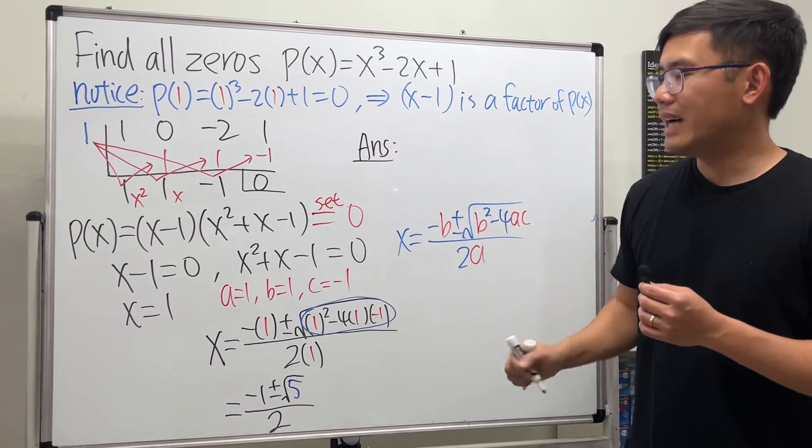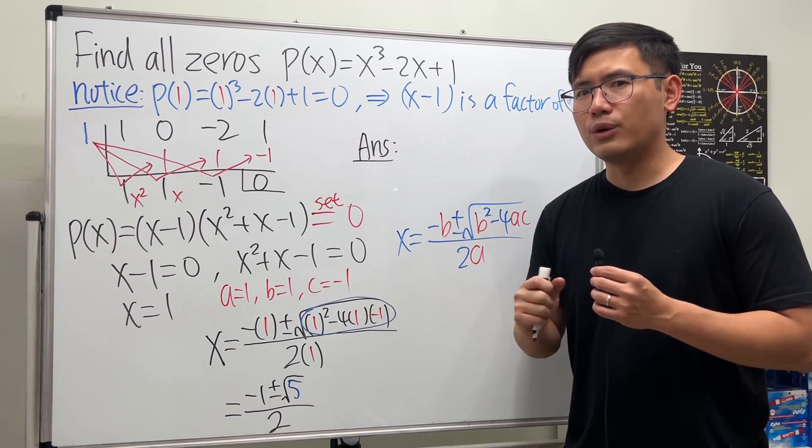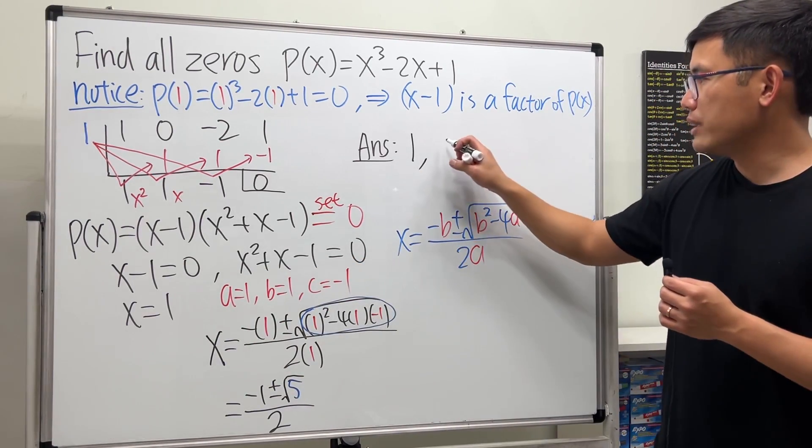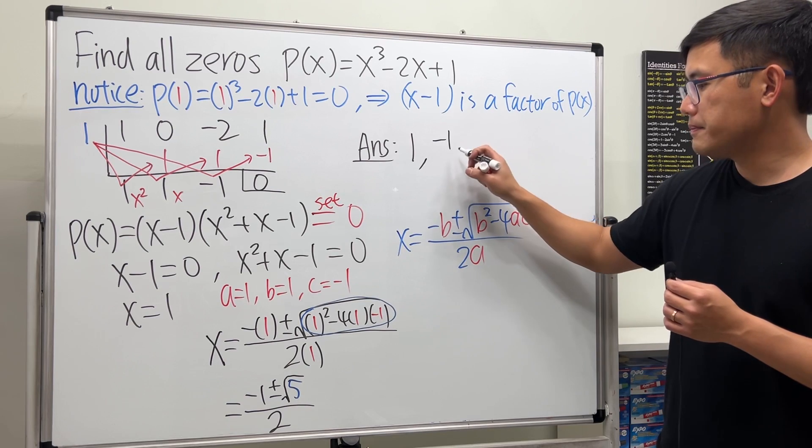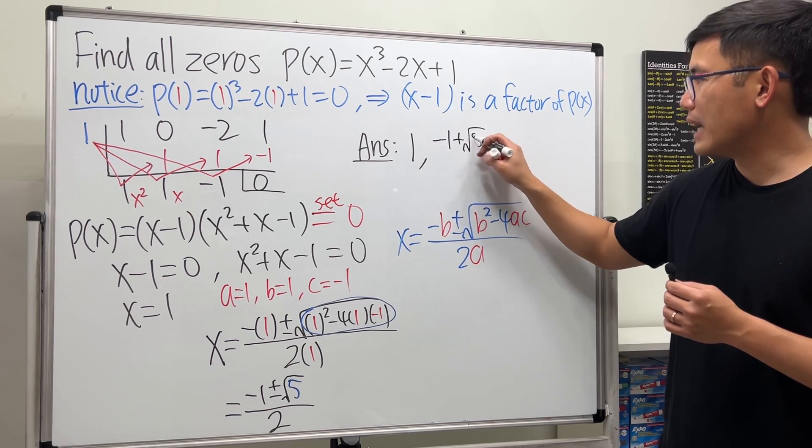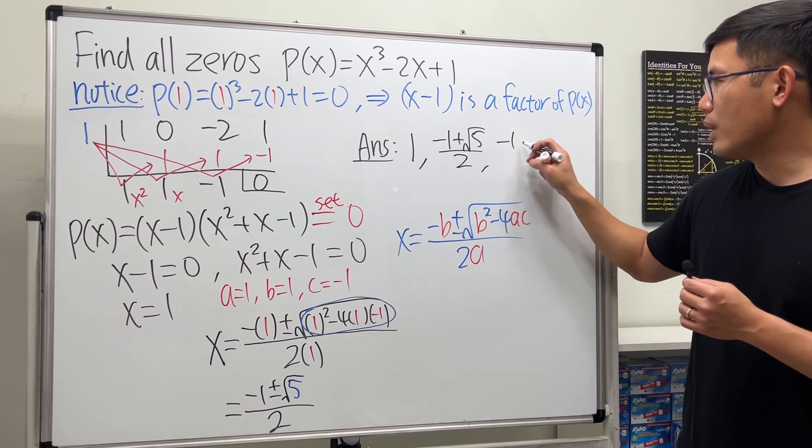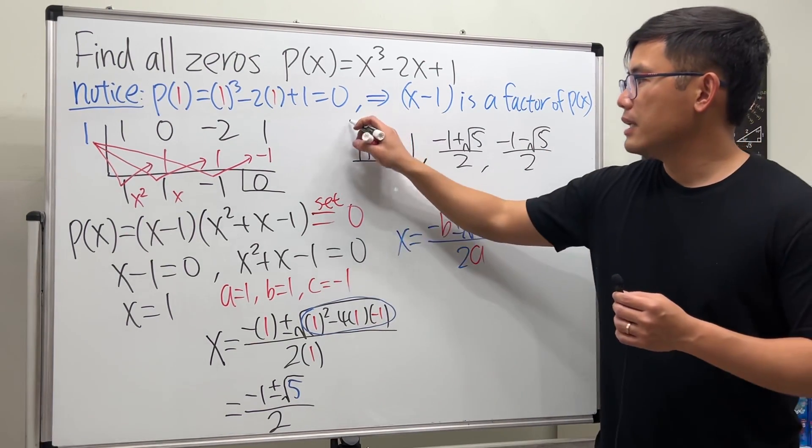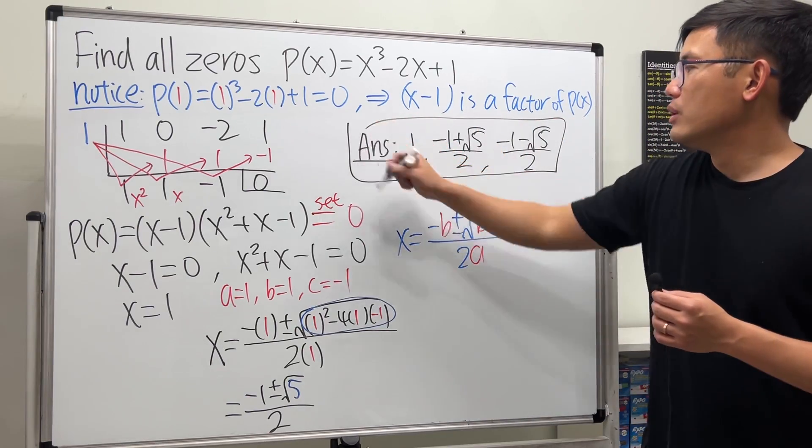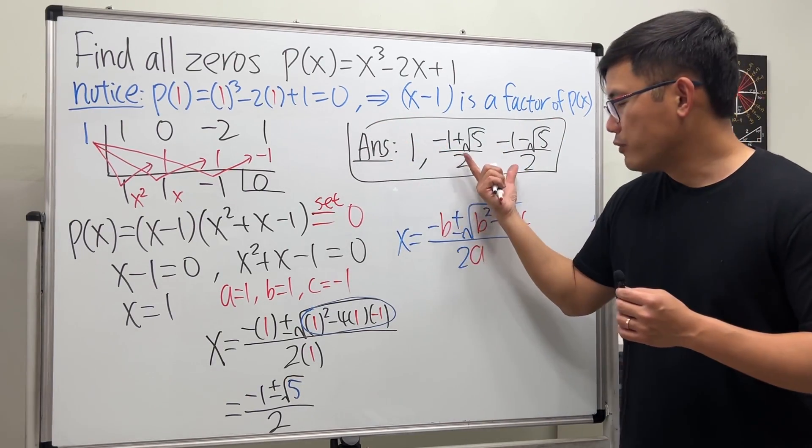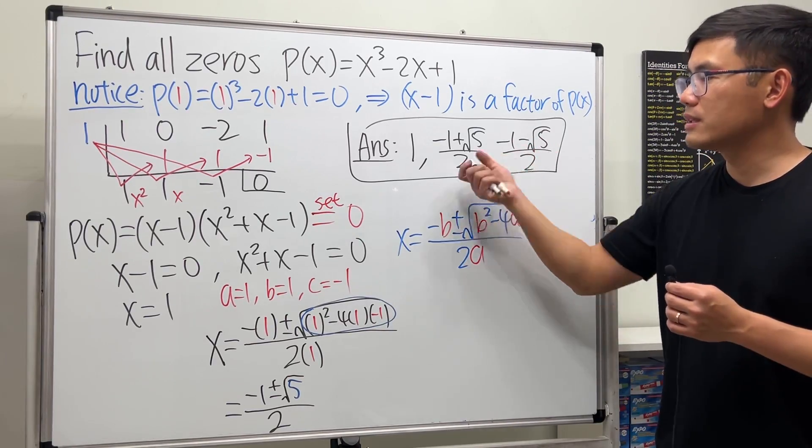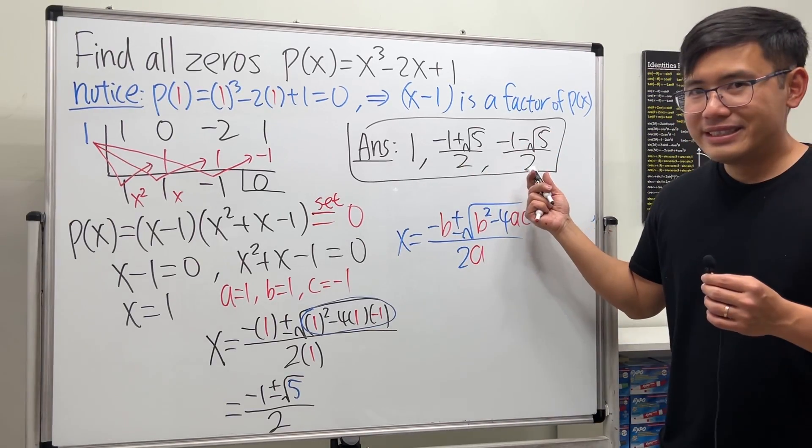We have a total of three zeros and they are all real. The first one is one. The second one I just write it out for you: negative one plus square root of five over two, and that's the negative one minus square root of five over two. This right here is it. Of course you could have written both of them together, but I just want to show you that we do have three real zeros. This is it.